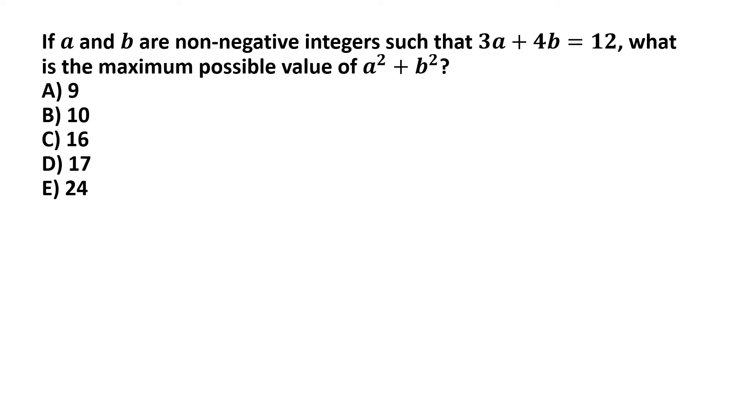If a and b are two non-negative integers such that 3a plus 4b is equal to 12, what is the maximum possible value of a square plus b square?